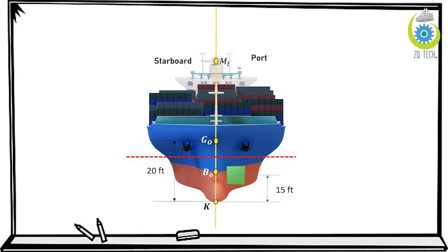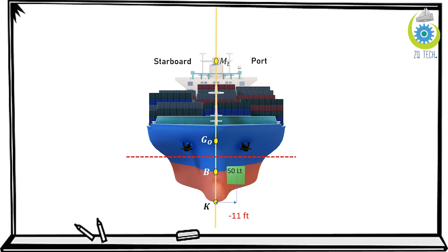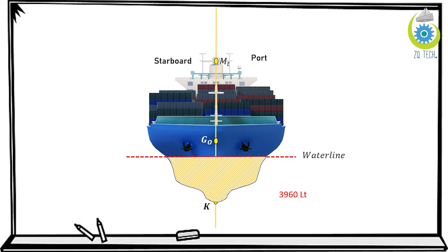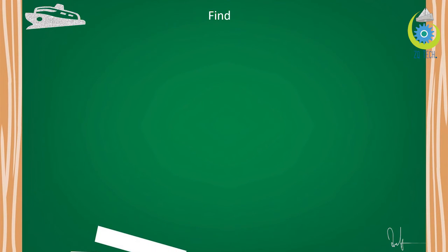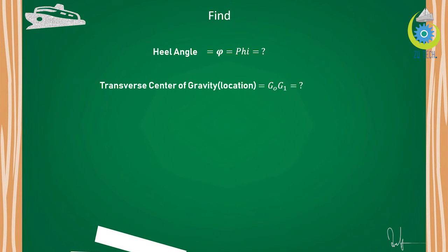Visualize the distances on a picture of the ship: the KG is 20 feet, the vertical distance to the fuel is 15 feet, and the horizontal distance from the centerline (yellow line) to the fuel location is 11 feet. The negative 11 is due to the convention in naval architecture — distances from the centerline towards the port side are taken as negative, and vice versa towards starboard as positive. We have to find the heel angle phi. To find phi, we need to find G0G1, and to find G0G1, we need to find KG1.